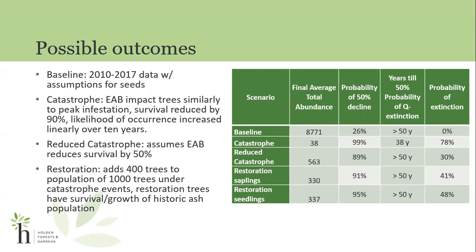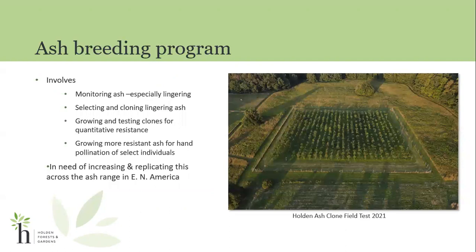I'd like to get into a little bit more of what the Forest Service has completed and how it all gets involved in their ash breeding program for resistance to EAB. It's going to involve monitoring ash — especially the lingering ash — to help us get a better idea of which ones to select and clone for testing. That testing allows us to put together individuals that have more resistance through hand pollination, which allows for better offspring in the future.